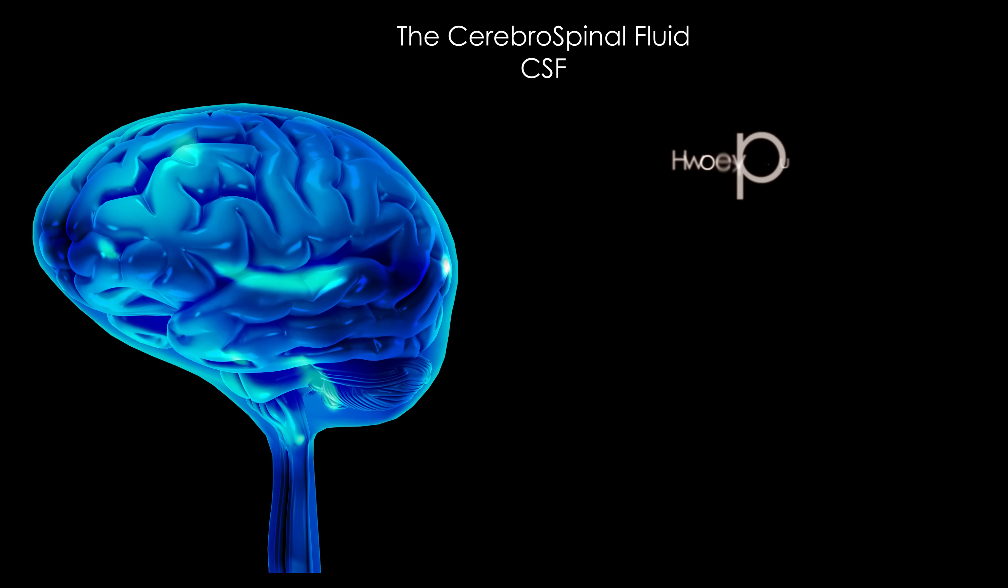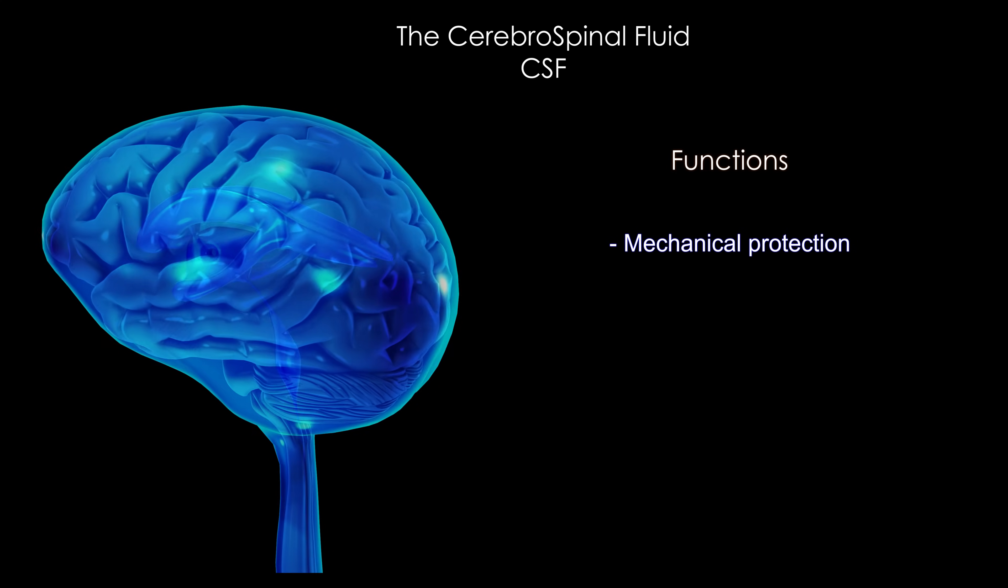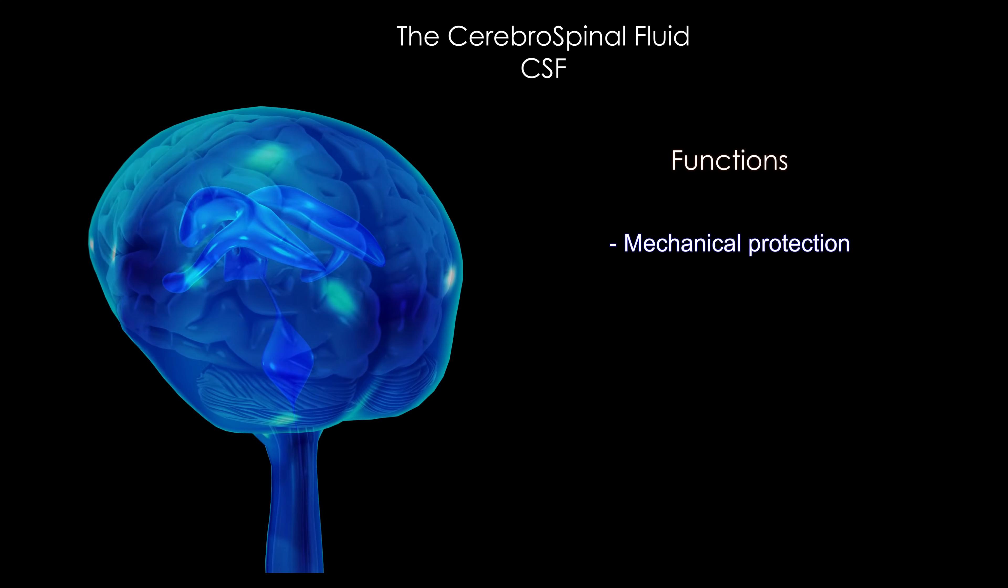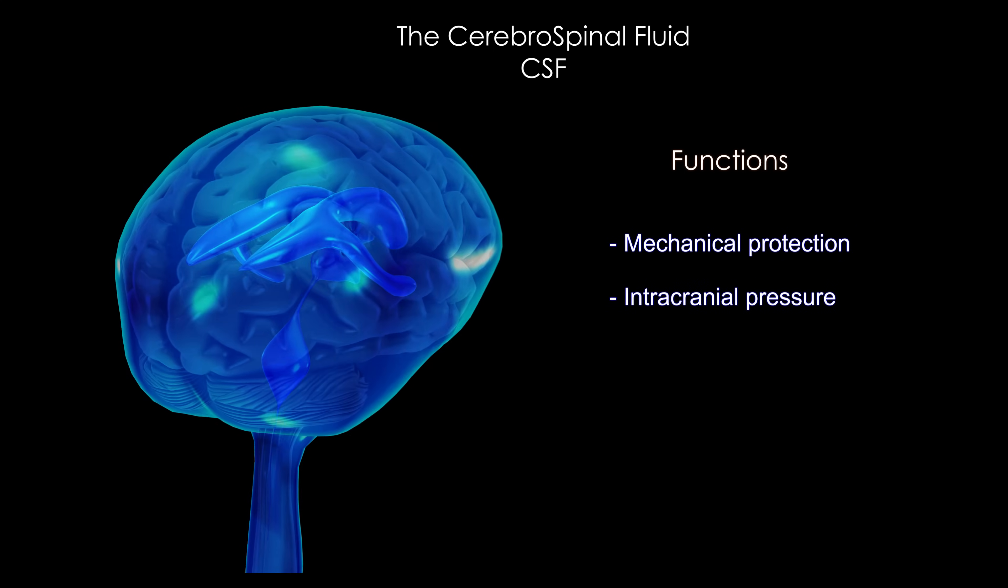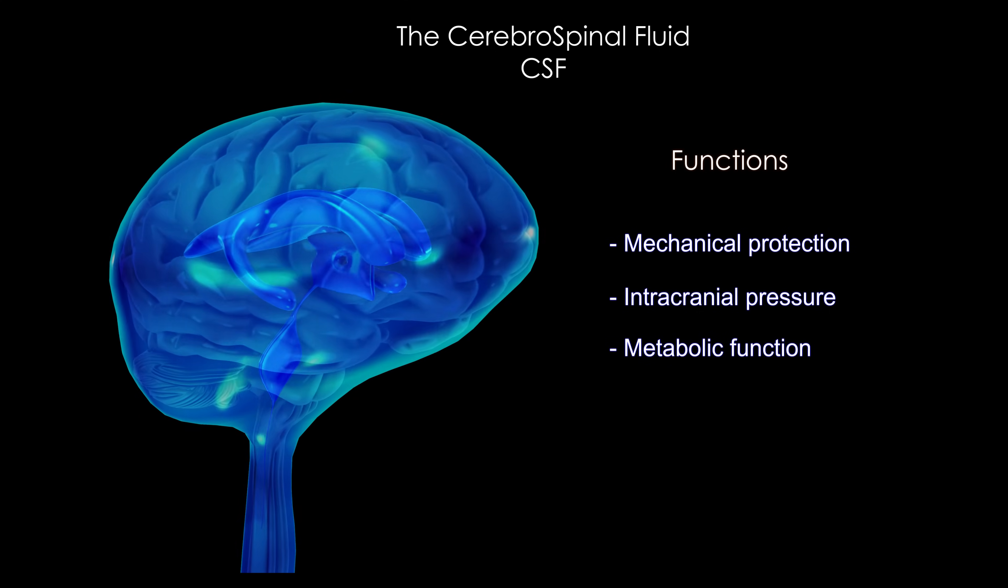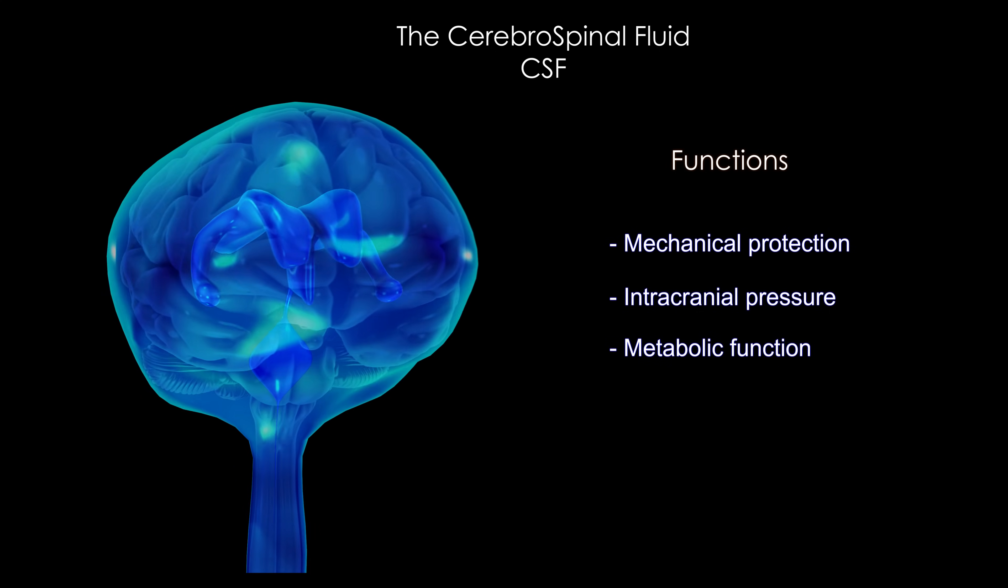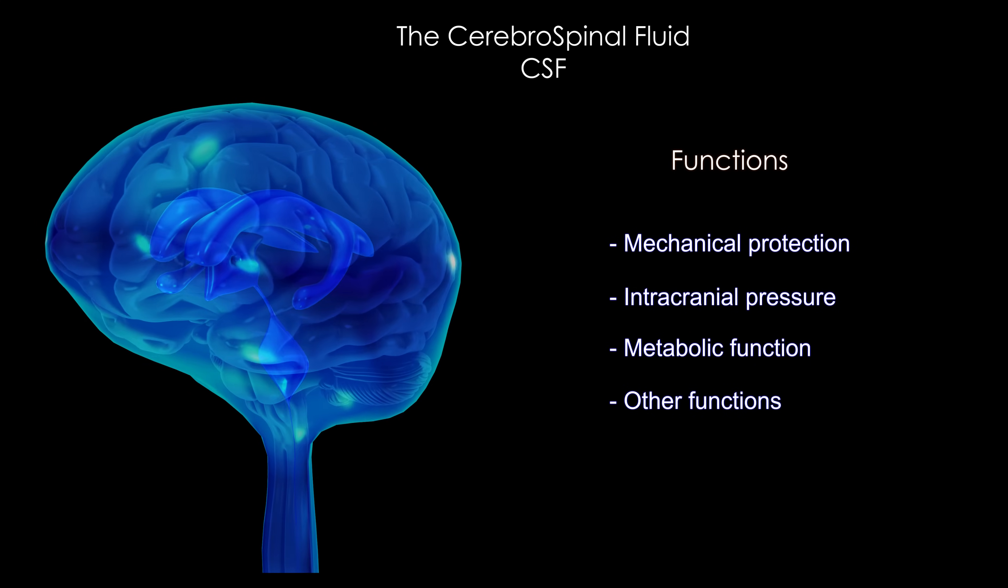The CSF ensures the protection of the central nervous system against mechanical shocks and vibrations. It plays an important role in the regulation of intracranial pressure, participates in cerebral metabolic processes by regulating the exchange of substances, and provides many other functions as well.